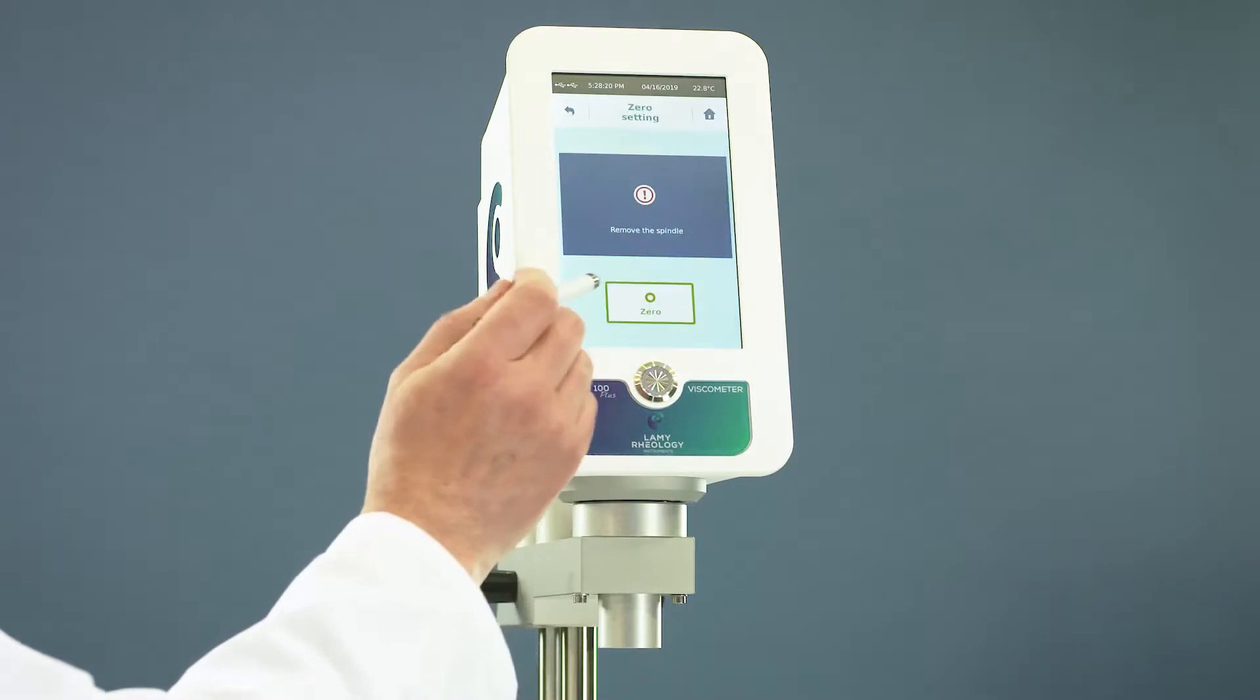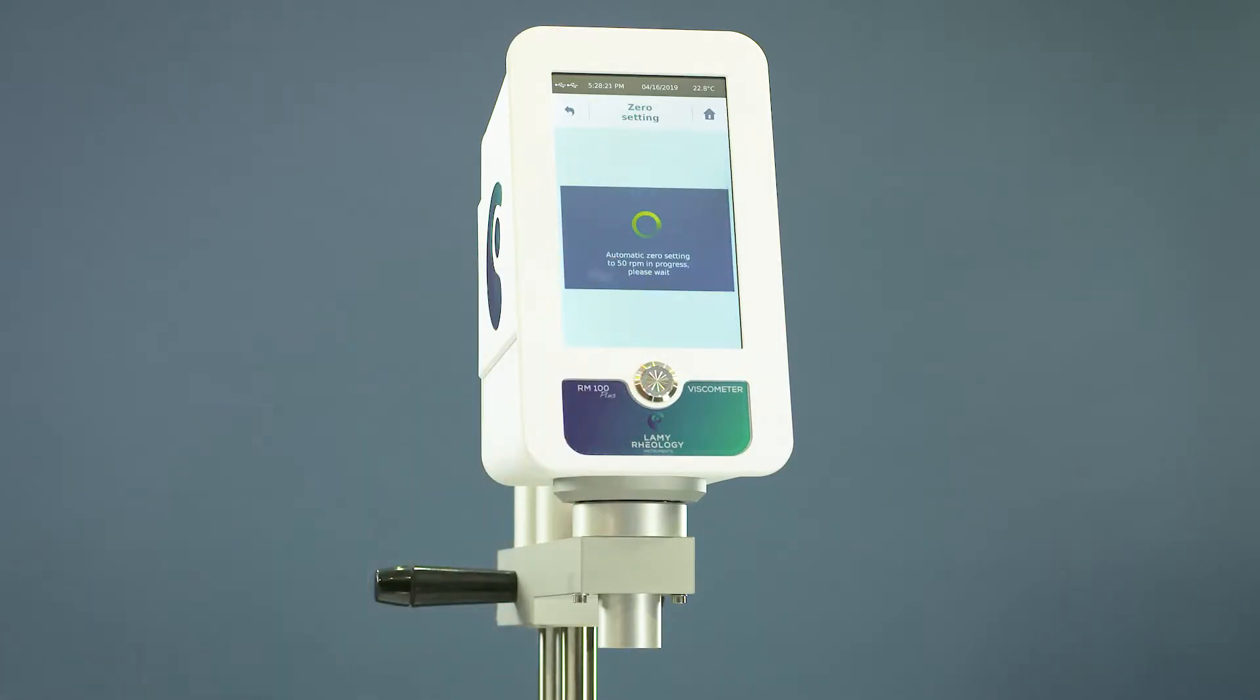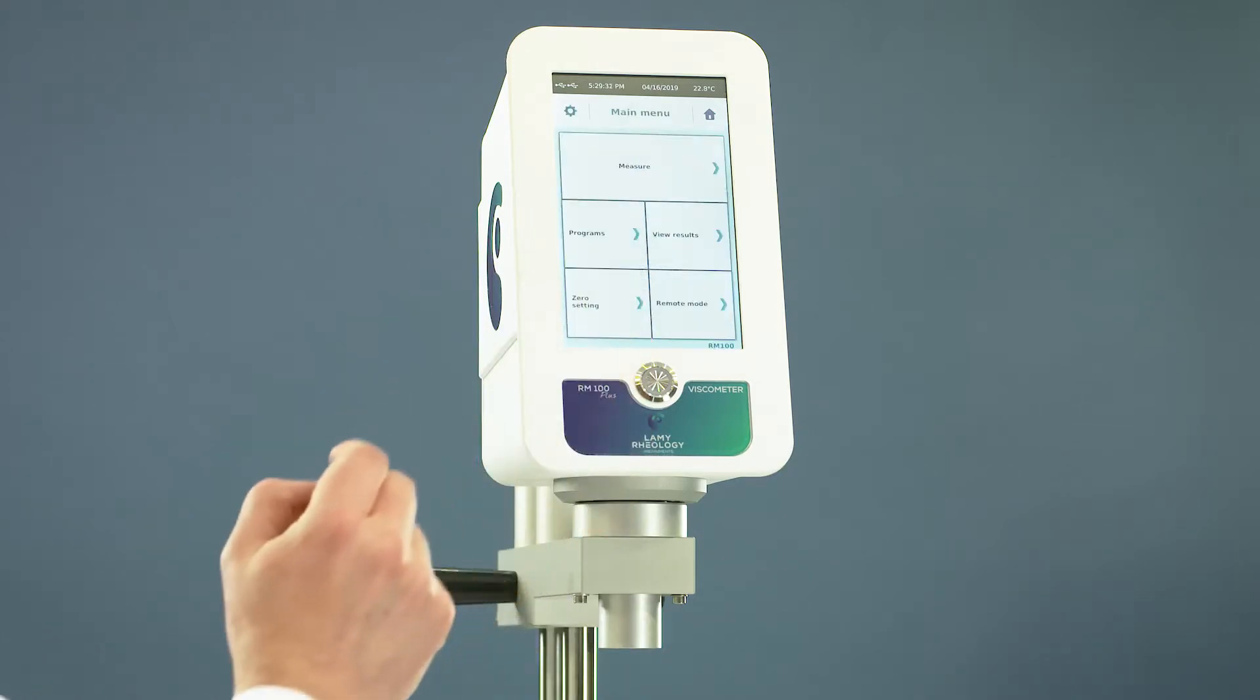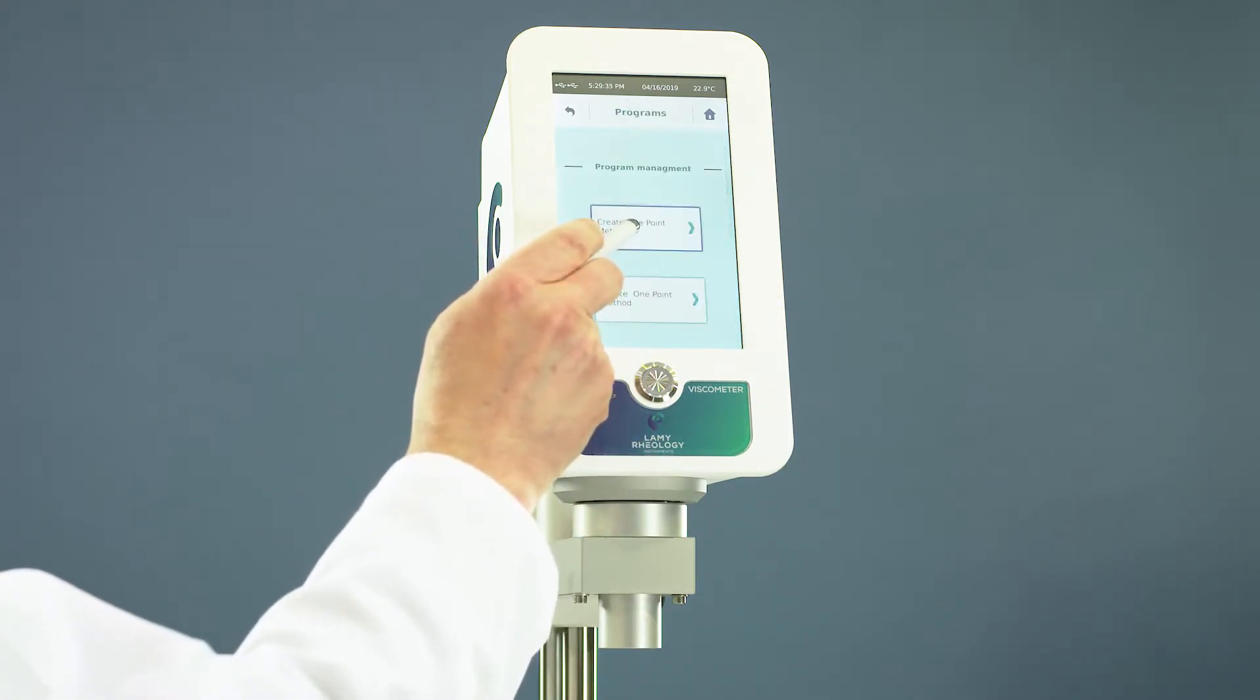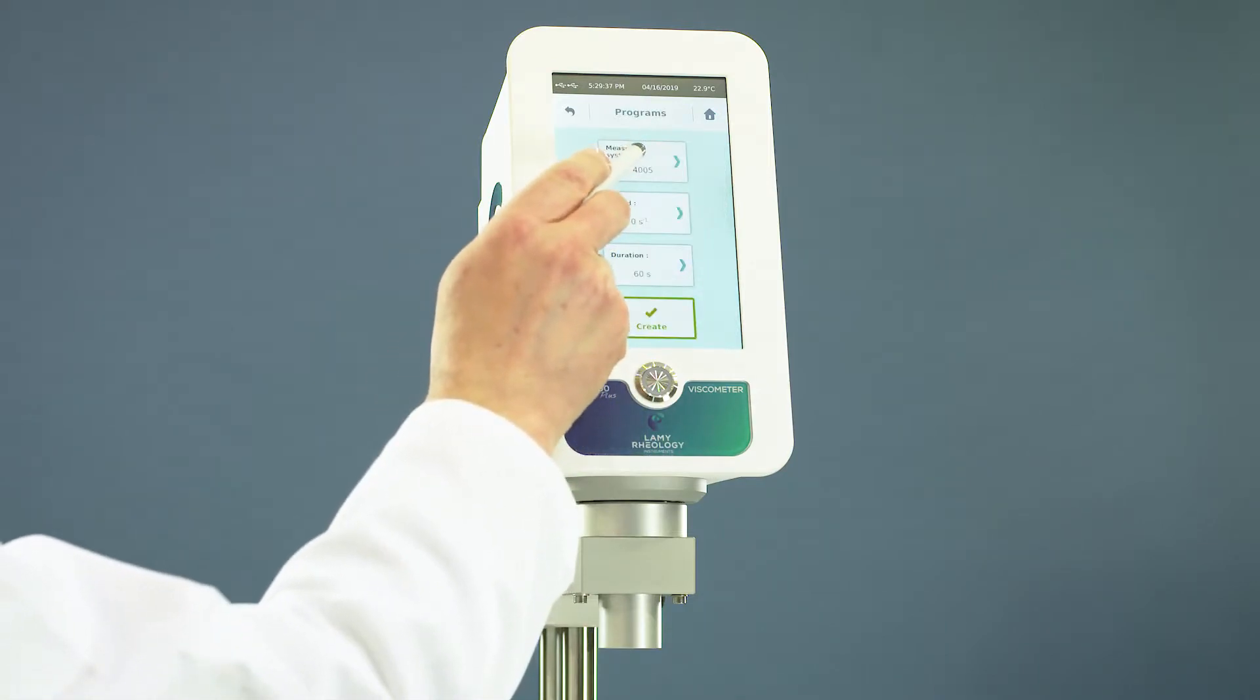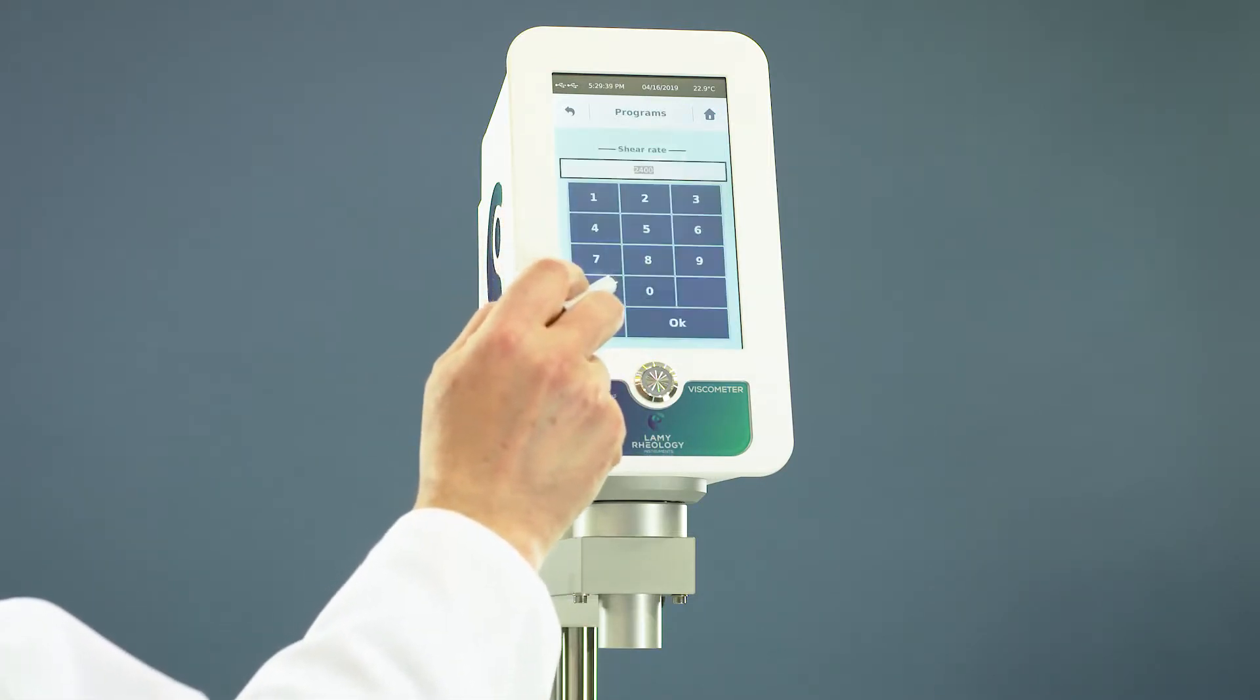Zero the device. You should make it at least once per day. Go to program, select the spindle, the shear rate, the duration, and save your method.